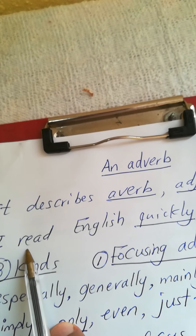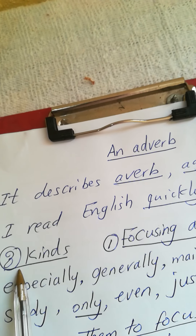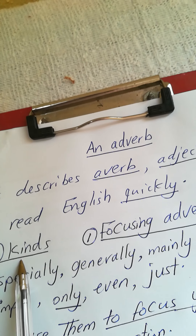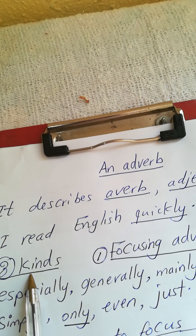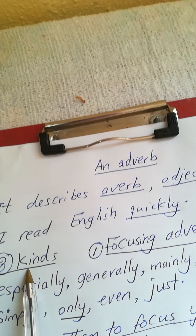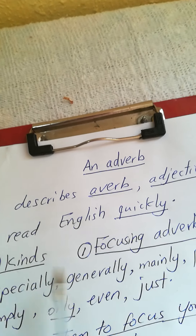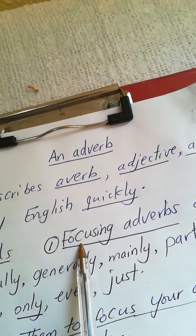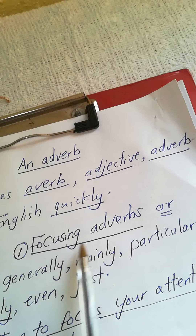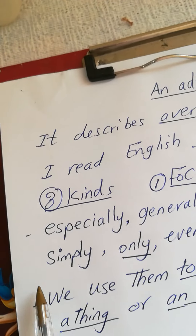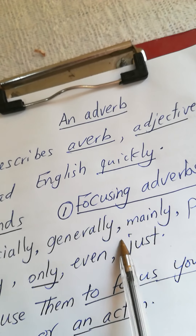How many kinds of adverbs do we have? We have eight kinds: adverbs of place, time, frequency, degree, focus, certainty, and viewpoint. But today I'm going to focus on — or concentrate on — focusing adverbs, or adverbs of focus. For example, I have eight adverbs of focus: especially, generally, mainly, particularly, simply, only, even, and just.